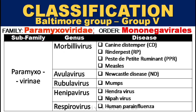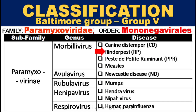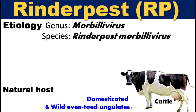Classification: Rinderpest belongs to the family Paramyxoviridae, classified under Baltimore Group 5, with the order Mononegavirales. Rinderpest virus, along with canine distemper and PPR, is classified under the genus Morbillivirus of family Paramyxoviridae. The disease is caused by the genus Morbillivirus, species Rinderpest Morbillivirus.